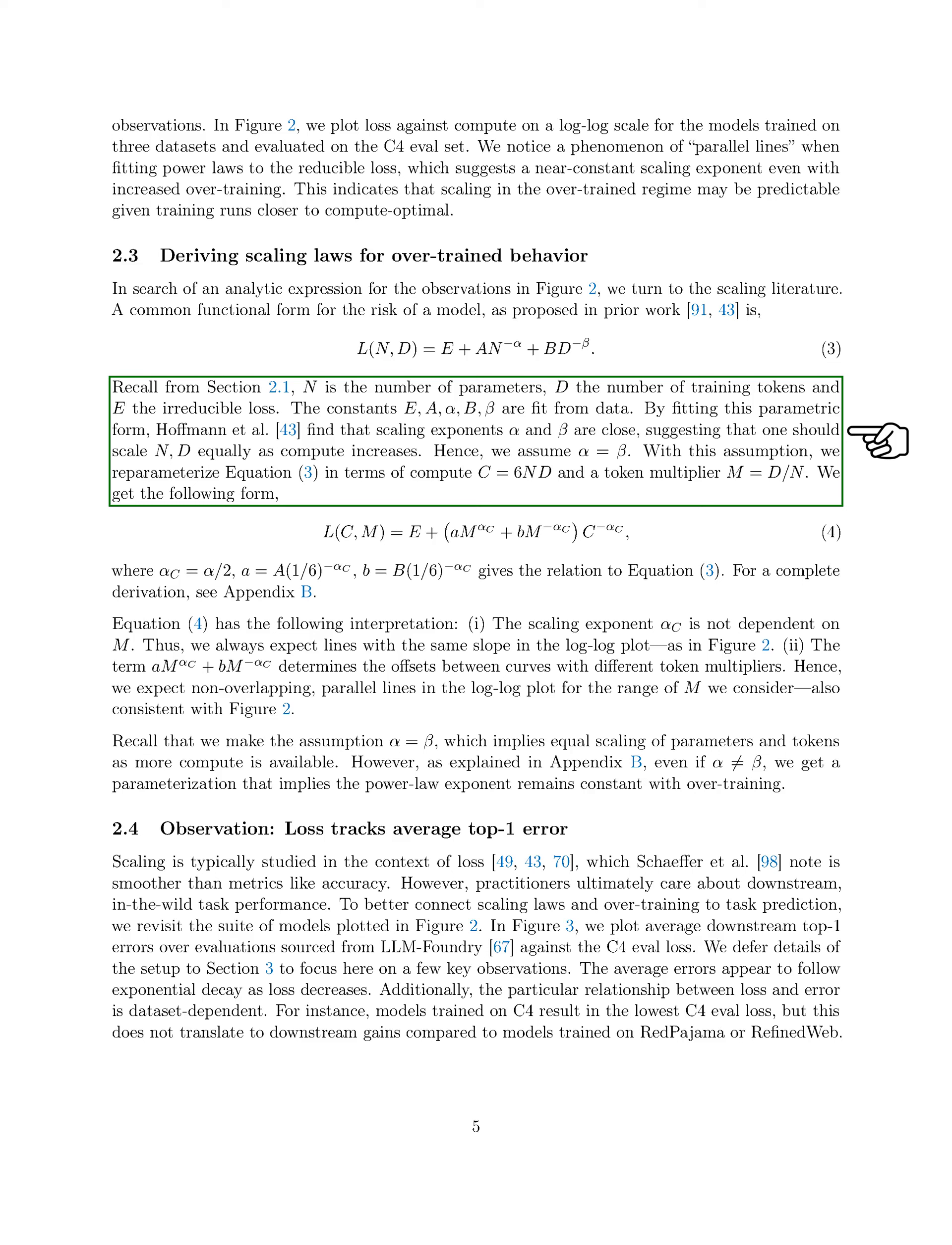By fitting this form to data, we find that the scaling exponents alpha and beta are similar, indicating that we should scale both n and d equally as compute increases. Therefore, we assume alpha is equal to beta. With this assumption, we reparameterize the equation in terms of compute, c equals 6nd, and a token multiplier, m equals d/n.